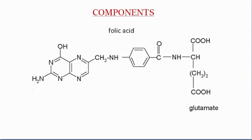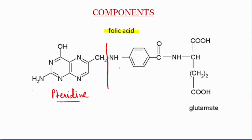First, we will see the components of folic acid. The first part is pteridine. The second part is para-aminobenzoic acid. And this part is glutamate.